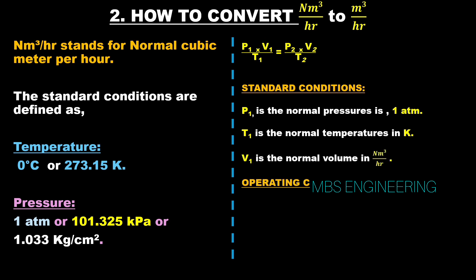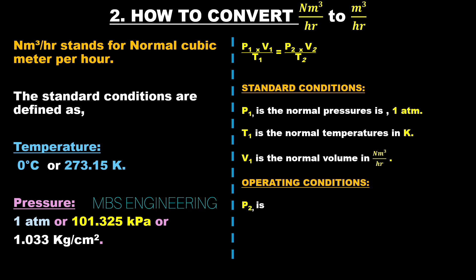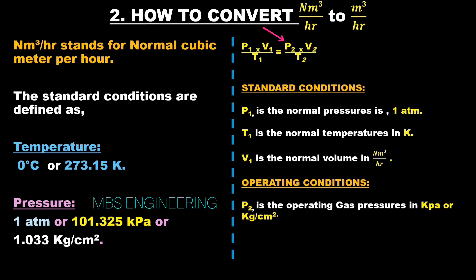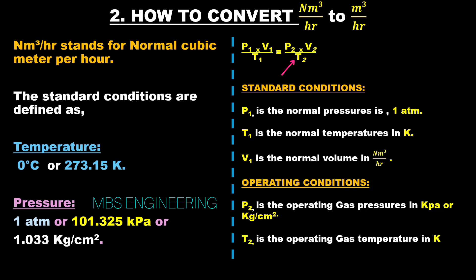The operating conditions are: P2 is the operating gas pressure in kilopascals or kilograms per centimeter square; T2 is the operating gas temperature in Kelvin; and V2 is the volume of the compressed gas in cubic meters per hour, which we need to calculate.